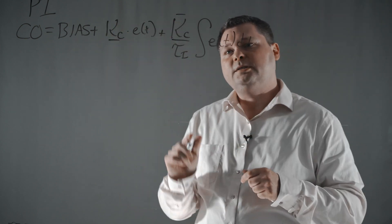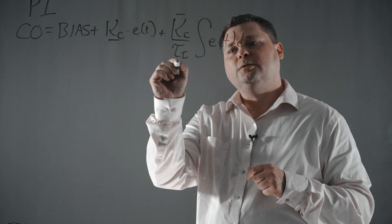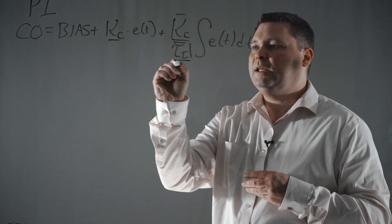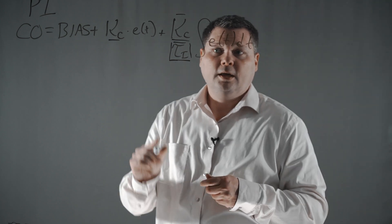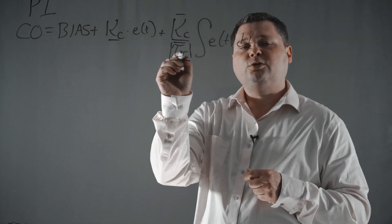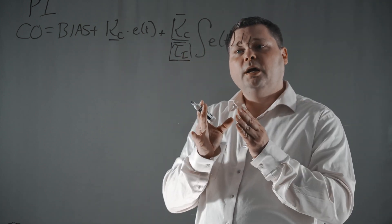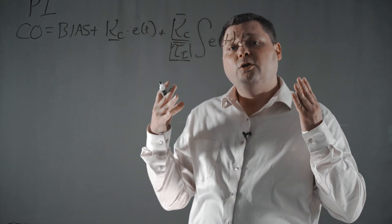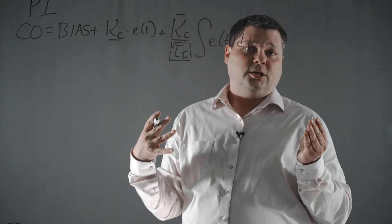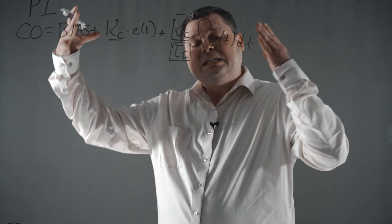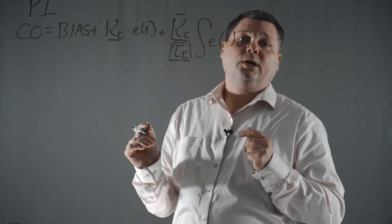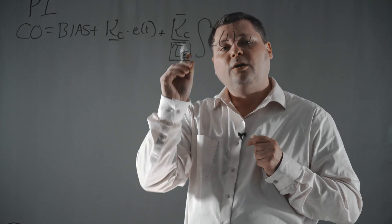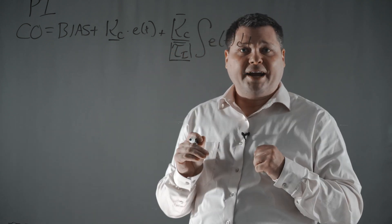In this particular example, the dependent form uses what's called a reset time, which is the value located in the denominator. If I make this reset time smaller, it'll effectively make this weighting factor larger and give the controller more integral action. So in the dependent form, the reset time is in the denominator — a smaller value gives it more integral action.